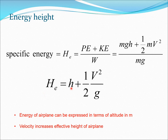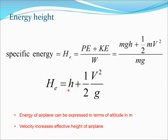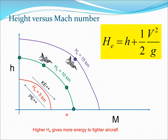We have created a new quantity called energy height, He = h + v²/(2g). This lets us express the combined kinetic and potential energy in terms of a single metric with units of meters (SI). As velocity increases, the energy height increases — at a given altitude, higher velocity means greater energy height, and lower velocity means lesser energy height. We can now plot an important diagram: altitude h versus Mach number.